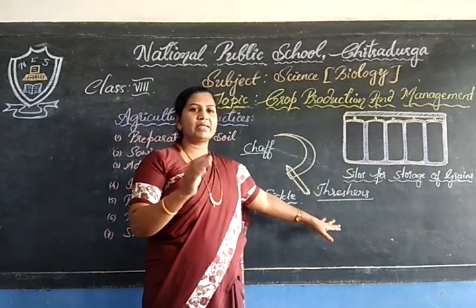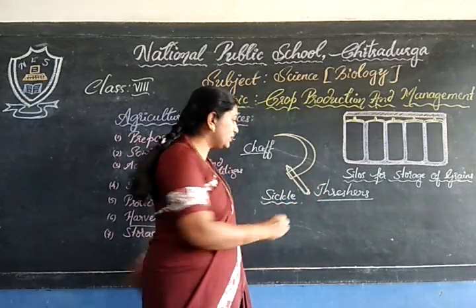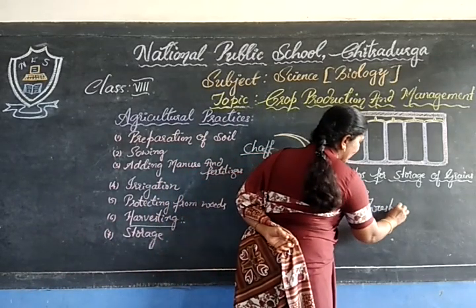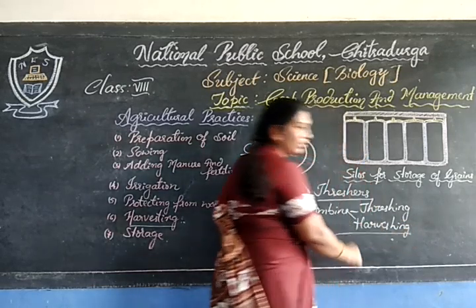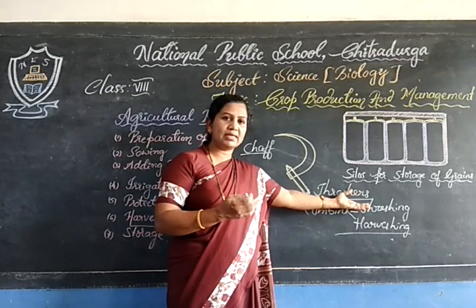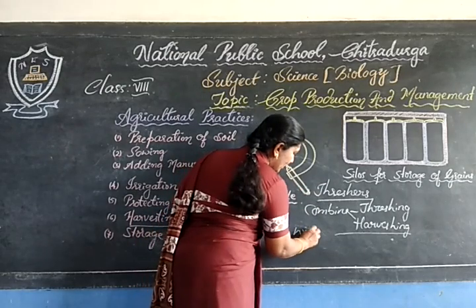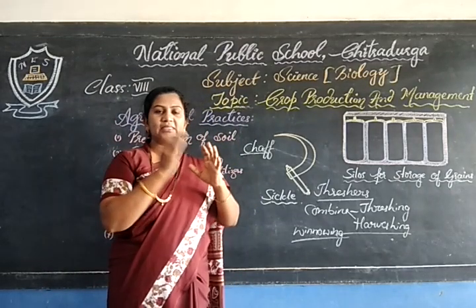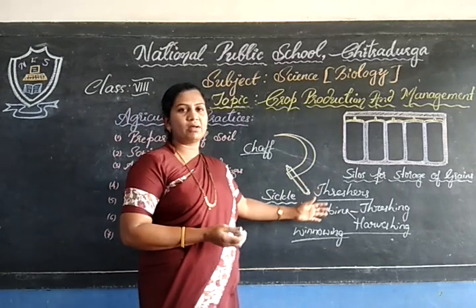For large-scale operations, combine machines are used. In the combine machine, both harvesting and threshing are done together — that is, the separation of seeds from the chaff — and then the crop is subjected to winnowing machines. The winnowing machine is fitted with fans that generate a wind current, so the husk gets separated to one side and the seeds fall to the other side.